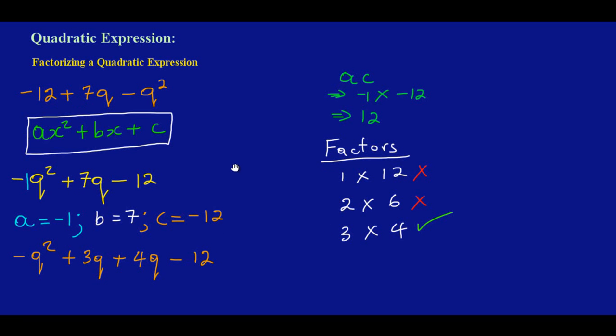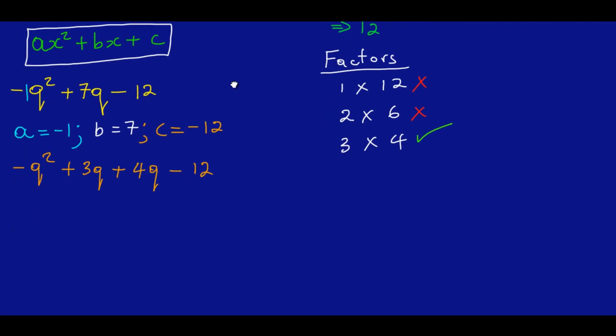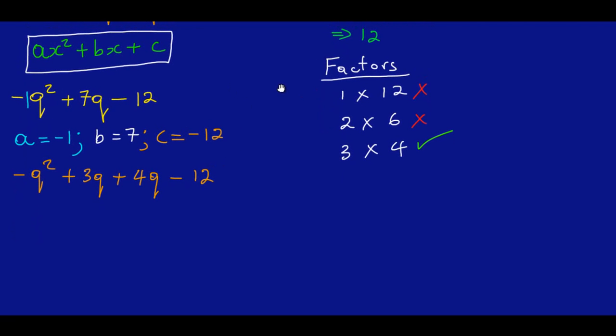Now we can factorize by grouping. So I can say what is common to -q and 3q? I'm going to take out my -q, then I'm going to open my brackets. So I'm going to say -q into -q² will leave me with a positive q, because a negative into a negative will give me a positive. Now -q into +3q will give me -3, and then my sign here is positive, so I'm going to bring it down.